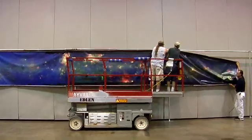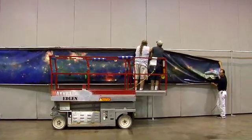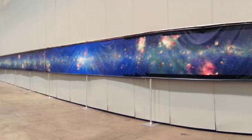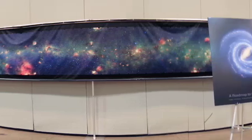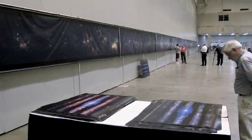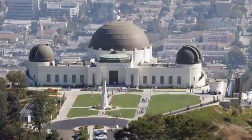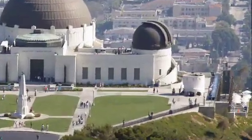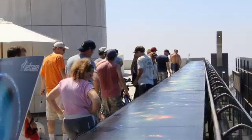A space image this big takes a lot of space to show off. Spitzer unveiled this giant banner, 4 feet tall and 180 feet long, at the 2008 Summer Meeting of the American Astronomical Society in St. Louis. Since then, it's been on display at the Adler Planetarium in Chicago and at the Griffith Observatory in Los Angeles.